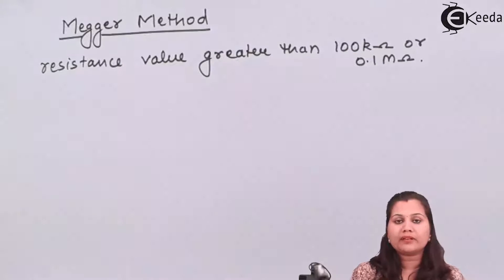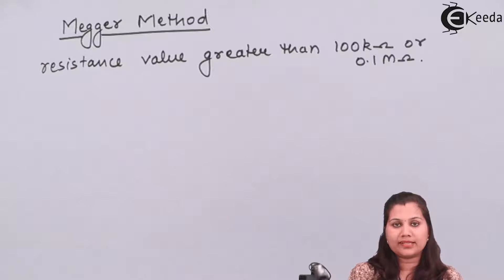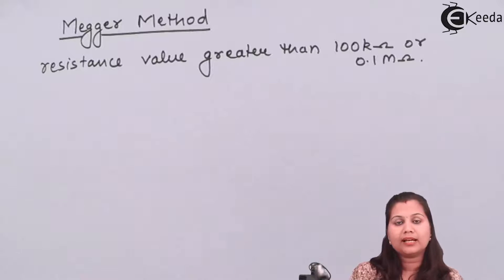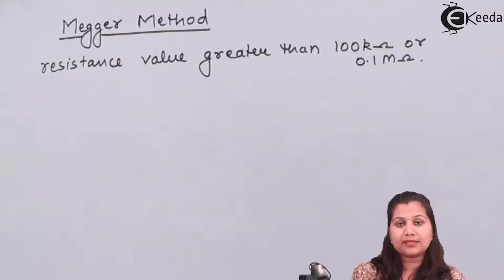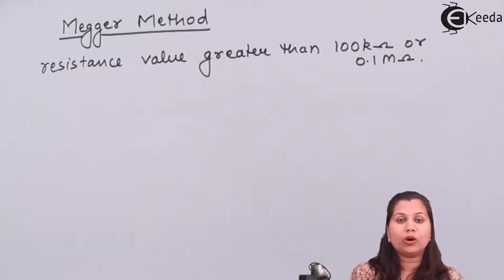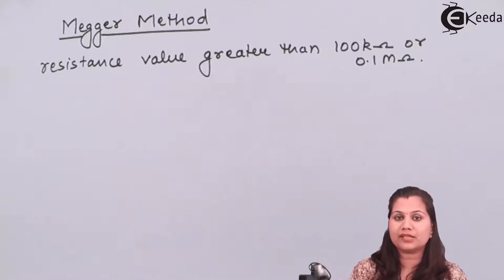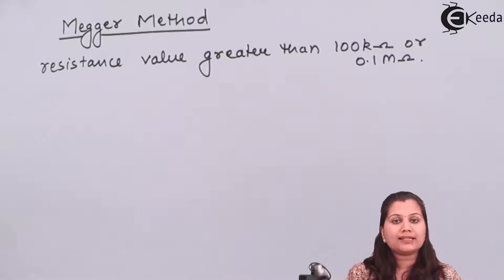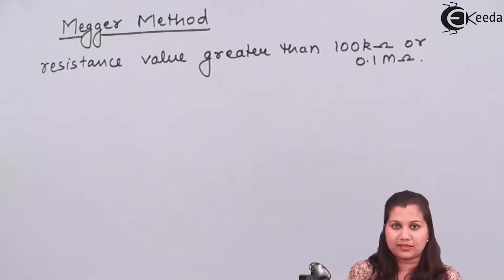There are various examples of high resistances, like insulation resistance of electrical equipments such as machines and cables, leakage resistances of capacitors, resistance of high resistance circuits like vacuum tubes, and volume resistivity and surface resistivity of the material. These are the examples of high resistances.